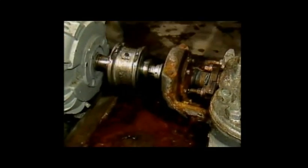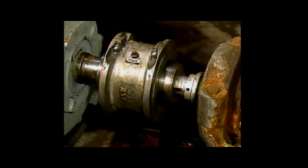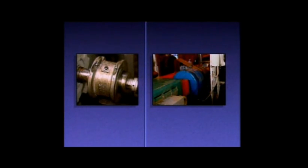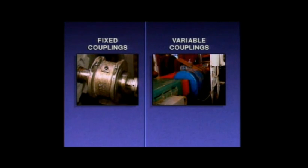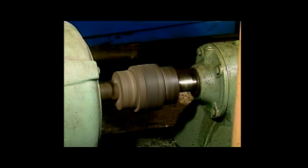Another piece of auxiliary equipment is a coupling — a device that connects the driver's shaft to the pump shaft. Couplings can be divided into two categories: fixed couplings and variable couplings. When a fixed coupling is used, the speed of the pump is fixed by the speed of the driver, so to change pump speed, the driver speed must change. When a variable coupling is used, the speed of the pump can be changed without changing the speed of the driver.